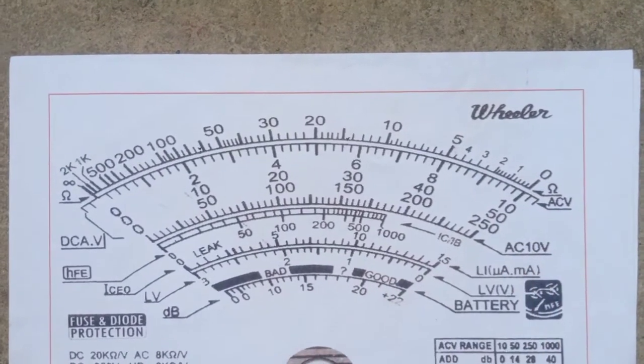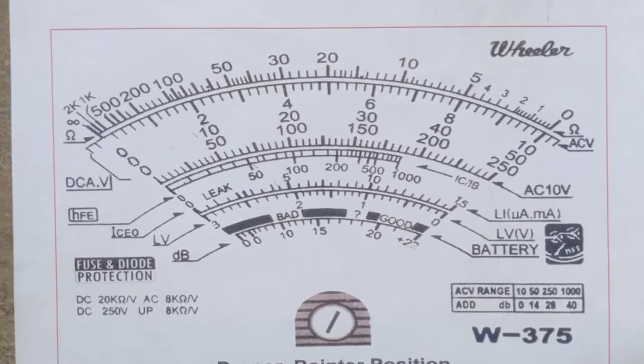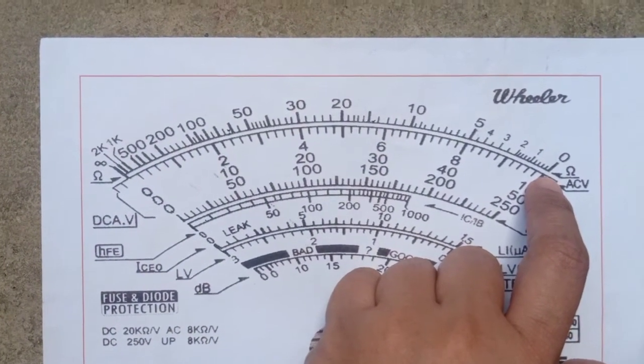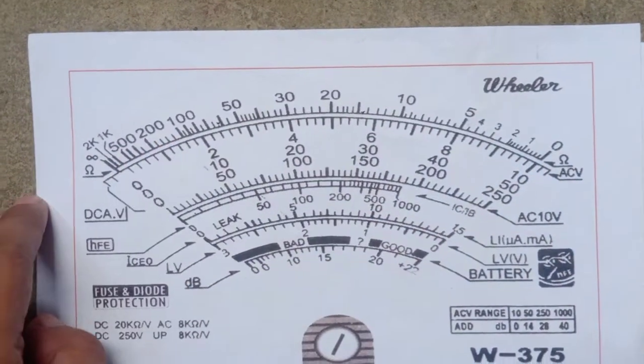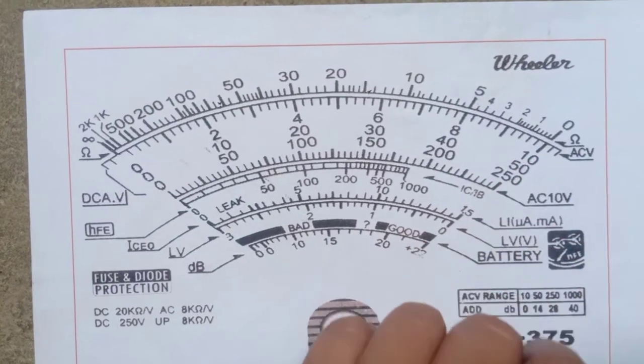Ito po yung replica ng makikita mong scale sa isang VOM or multi-tester. Paano mo mabibilang or paano natin makukuha yung linear measurement niyan? Ang tawag dito ay non-linear kasi iba-ibang measurement kada lines.